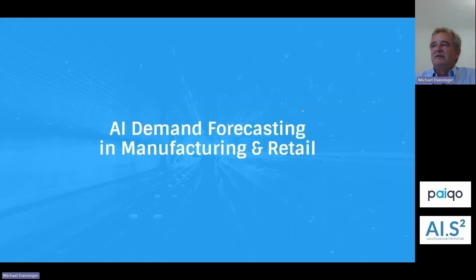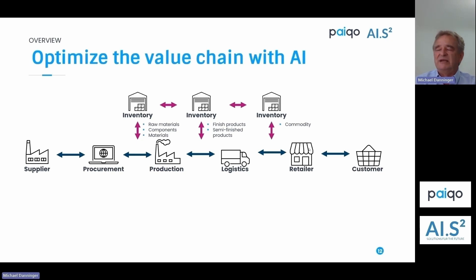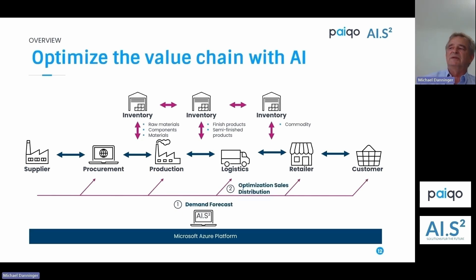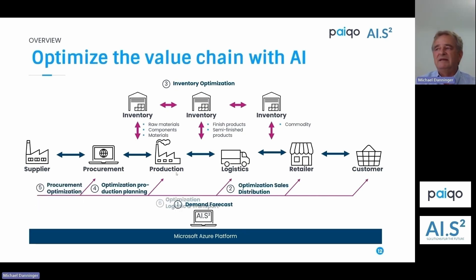Looking at the overall value chain: normally when we talk about demand forecasting we're talking about the right side — when product goes to your retailer or end customer. But our solution can support the whole value chain process, not only demand. It can also help you optimize sales and distribution, inventory optimization, production planning, procurement, and logistics and transport.